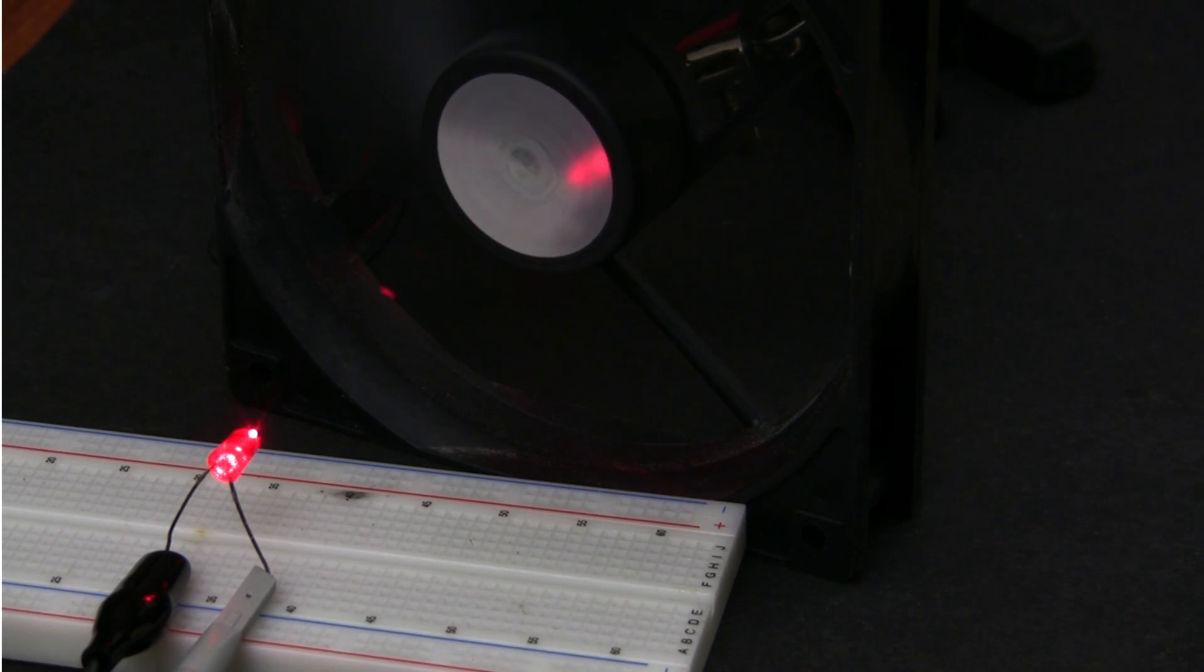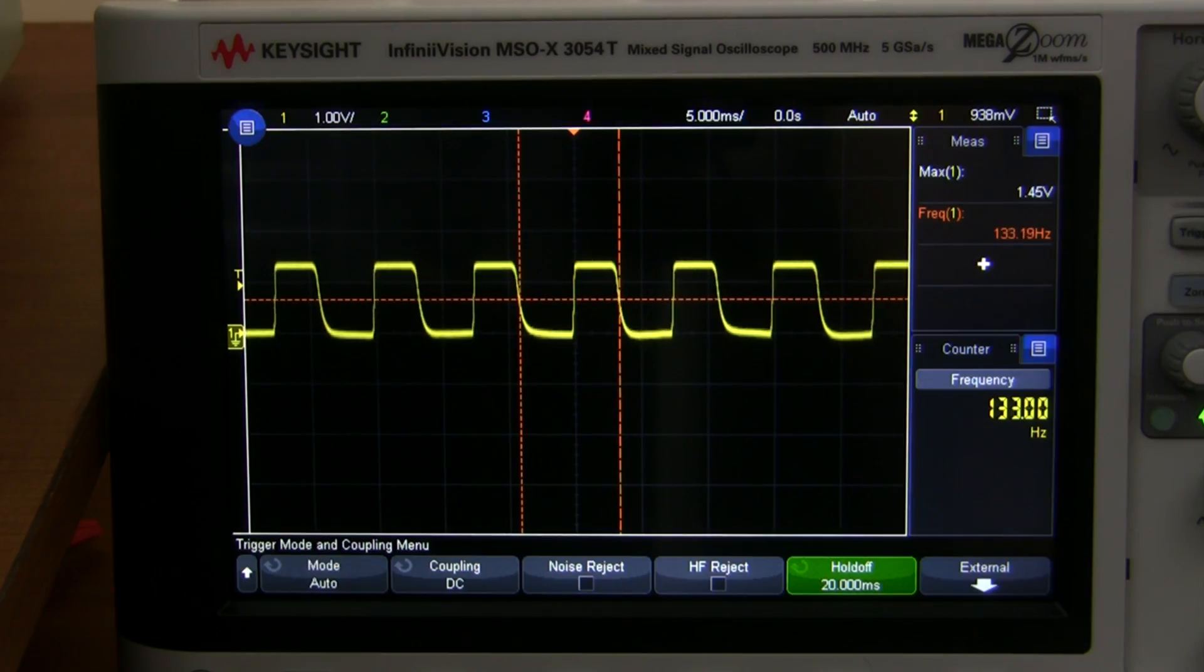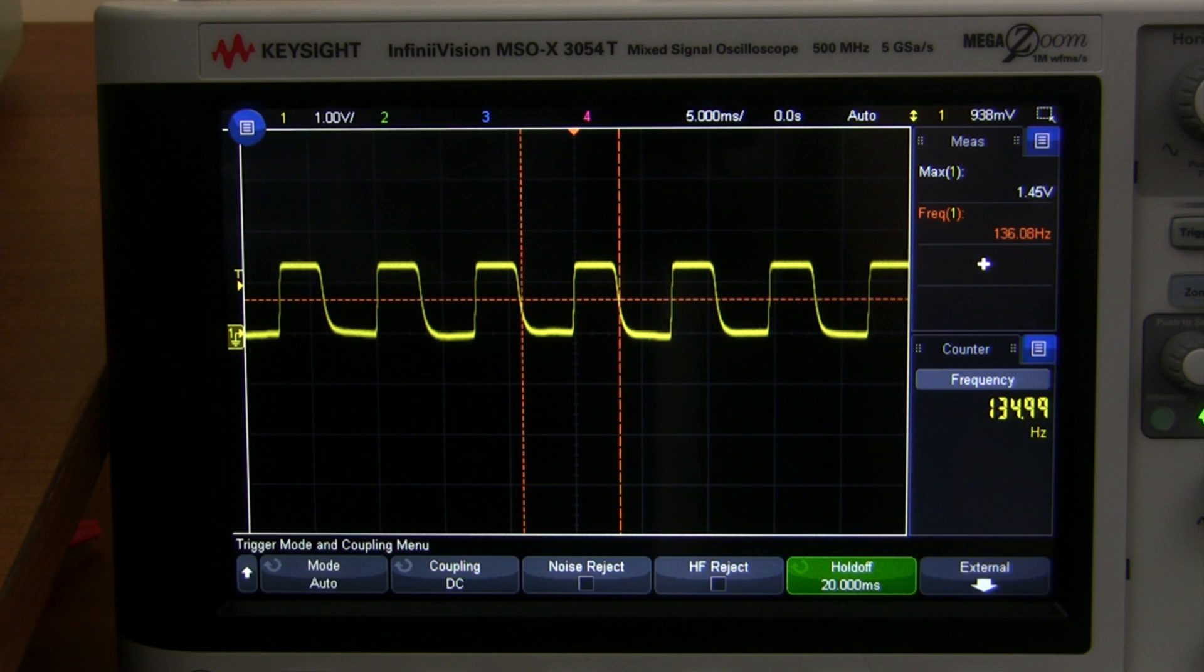Here's an example with a PC case fan. You can see that the laser is being interrupted at around 133 Hz. Just so you know, you may have to adjust your trigger hold-off setting in the oscilloscope to stabilize the waveform.